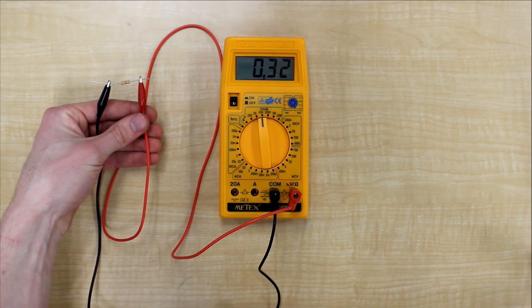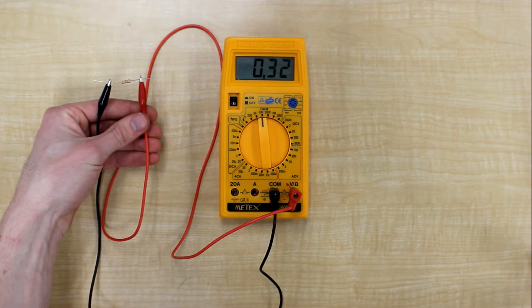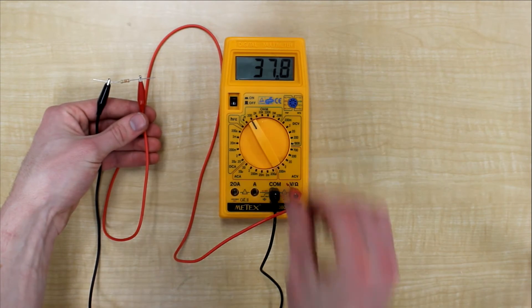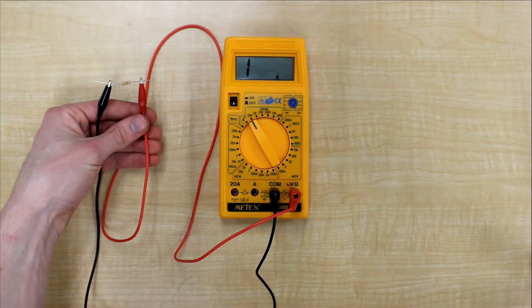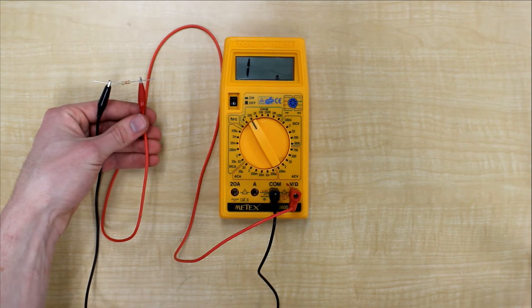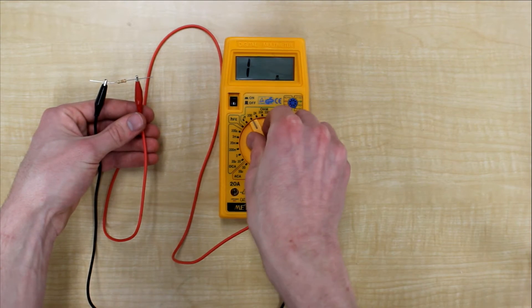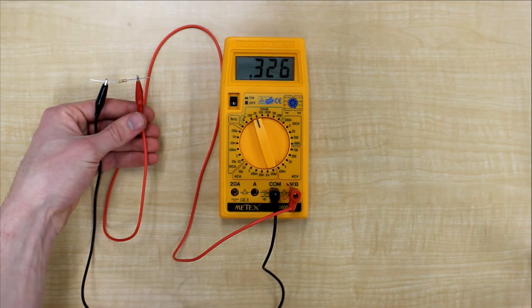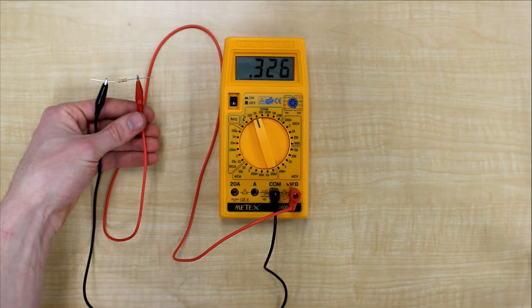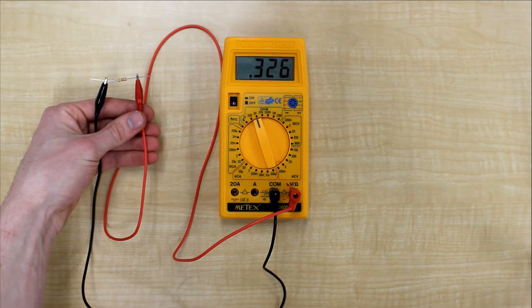Here we are measuring 0.32 and it's on 20 kilo ohms, so we know that's 0.32 kilo ohms. If we go down to 200 ohms, we see that we can't see a value. This is because the ohm measurement is too low. Putting it up by one, we can see that the value is 0.326 kilo ohms, which is 326 ohms.